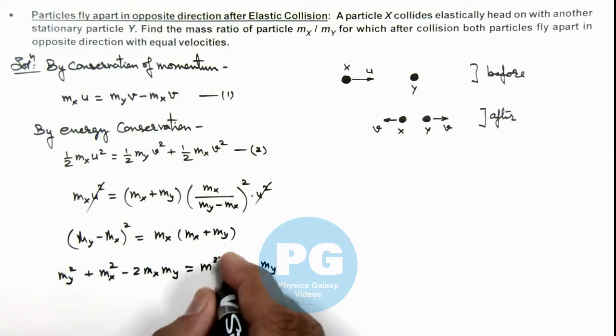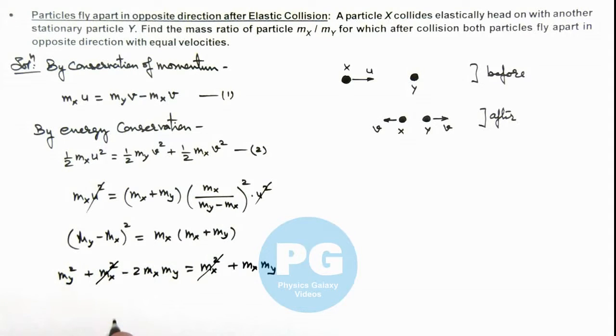Here this mx square also gets cancelled out, and it gives us the value of mx over my is equal to 1 by 3. That is the final result of this problem.